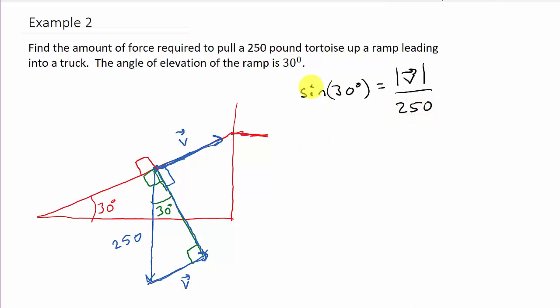So if we move the 250 up here, we get the magnitude of V is equal to the sine of 30 degrees times 250. And so we just punch that into the calculator. So we get 250 times sine 30.